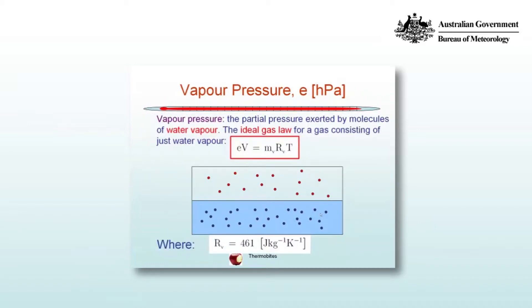We'll define vapour pressure as the partial pressure exerted by molecules of water vapour. The ideal gas law for a gas consisting of just water vapour is shown here. E is the vapour pressure in hectopascals, and EV equals mRvT, where m is the mass of vapour, Rv is the specific gas constant for vapour at 461 joules per kilogram per kelvin, and T is temperature.